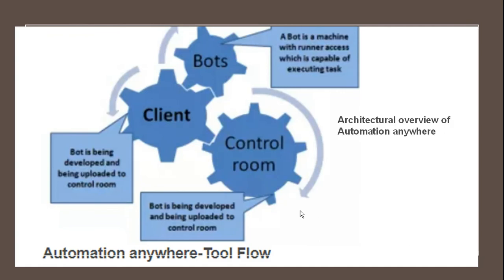When we talk about how a bot works or is coded in Automation Anywhere, the architecture is important. The bot is all about runner access in a machine — executing logs and executing all the tasks. A bot connects to both the client and the control room. Once you develop the bot, it has to be uploaded into the control room. The client acts as an interactive layer between the bot and the control room.